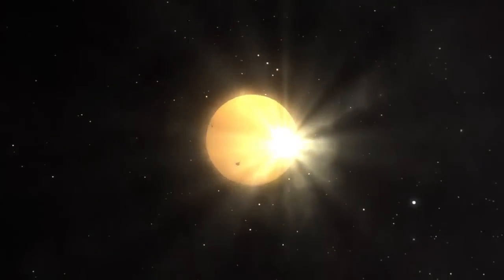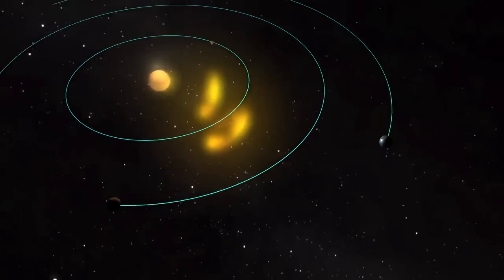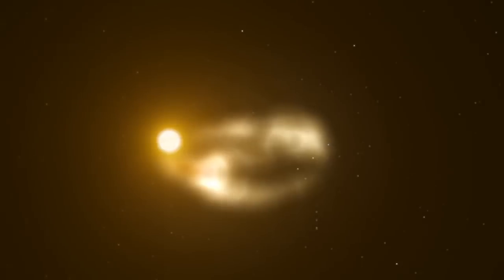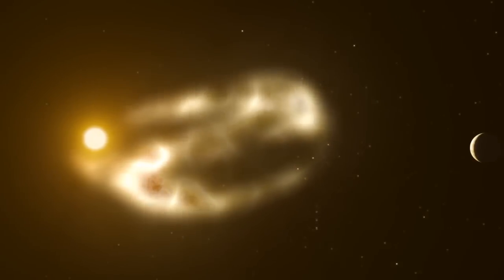A CME is a huge cloud of plasma that bursts out of the Sun's atmosphere and is held together with magnetic fields. An average CME travels at about 1 million miles per hour and weighs around 2 trillion tons.